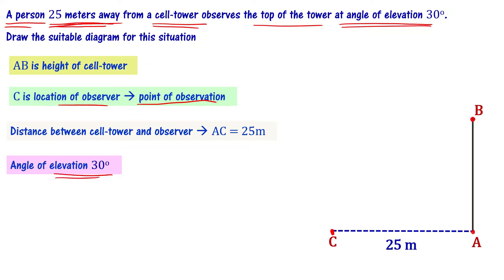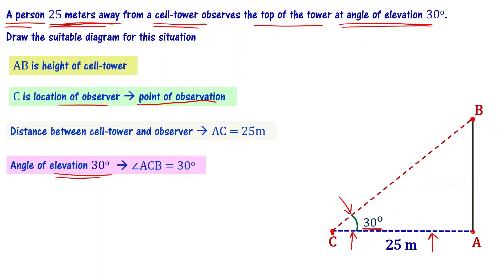From C to B, draw a line of sight. This line of sight makes a 30-degree angle with the ground AC. The angle between the line of sight BC and the horizontal level is 30 degrees — that is the angle of elevation. Angle ACB represents 30 degrees. Angle BAC is 90 degrees, so we have a right-angle triangle. We can use trigonometry concepts to find the height of this tower.